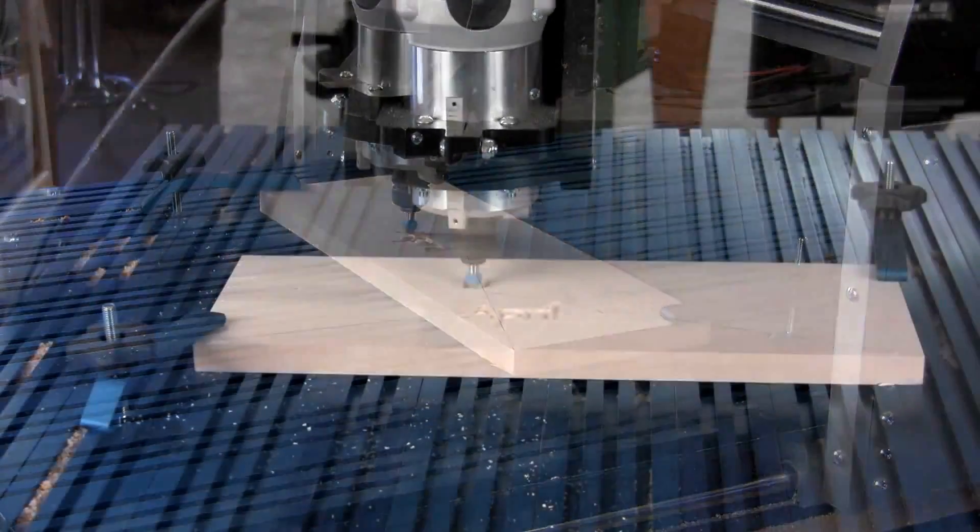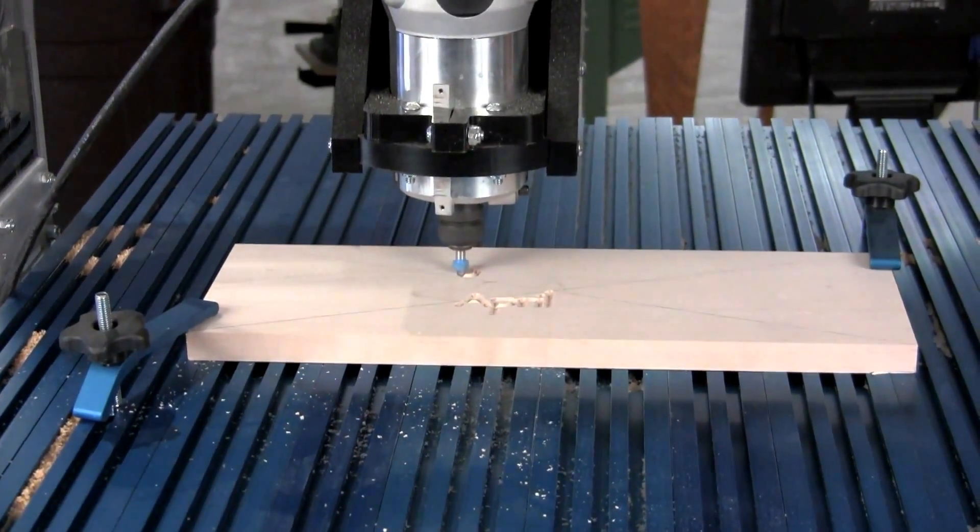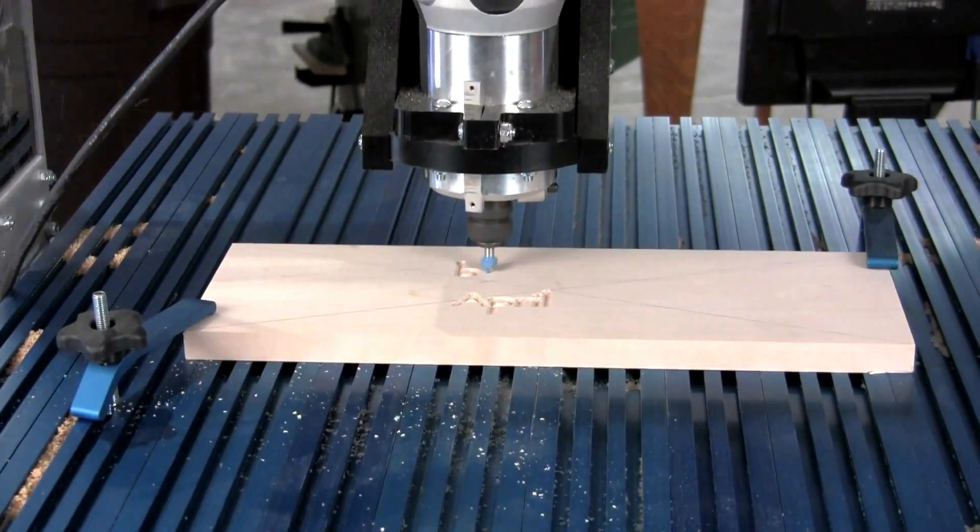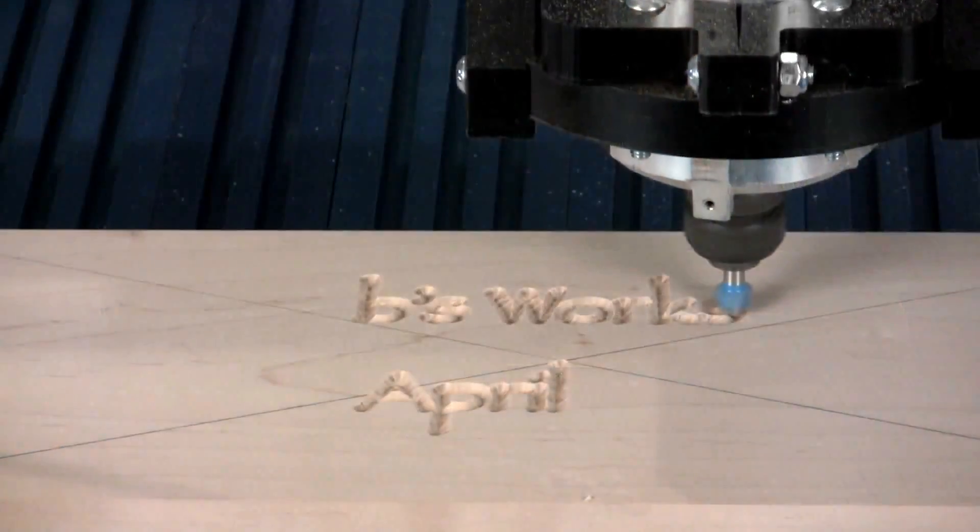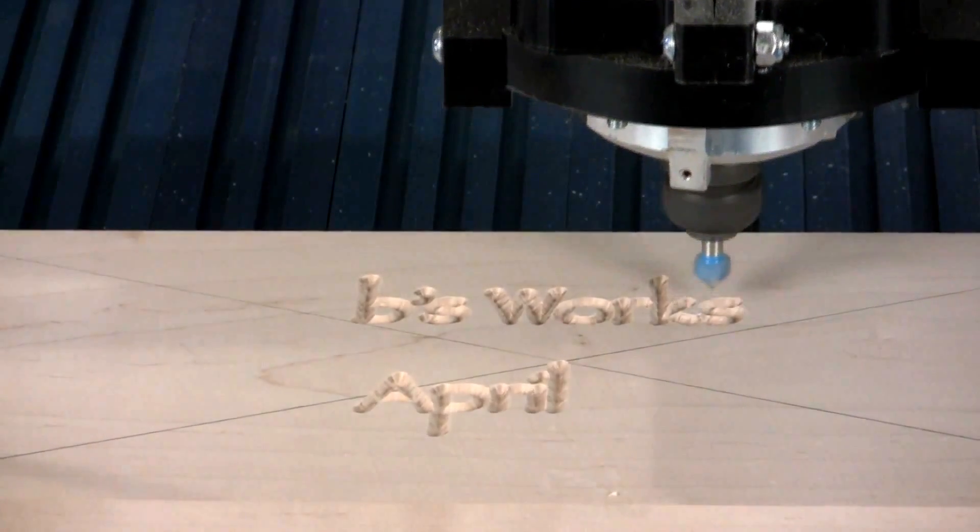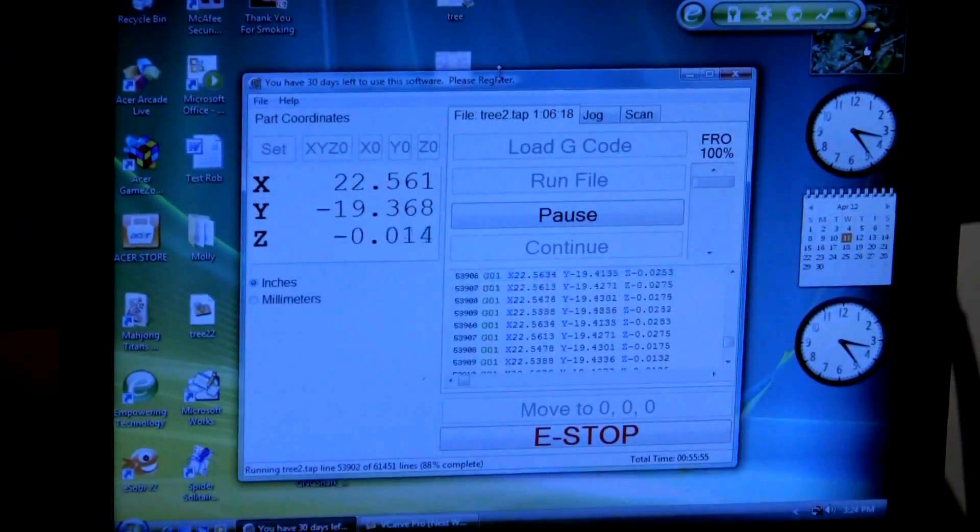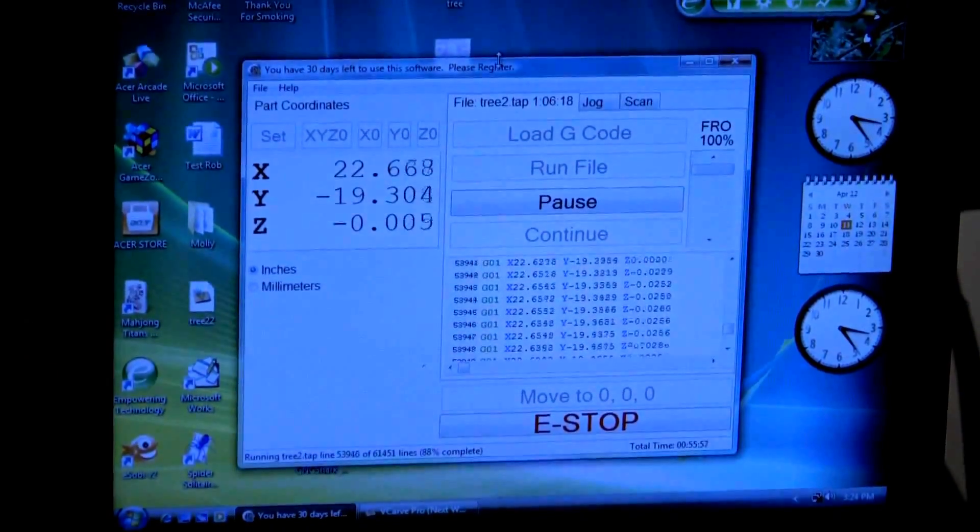Once the machine is set up and it started cutting, there's really nothing for you to do but watch it. The great thing about this is all that setup is repeatable. So all I have to do is load the file the next time and I can make another sign as many times as I want. Just watch it through the first time and make sure everything is fine.